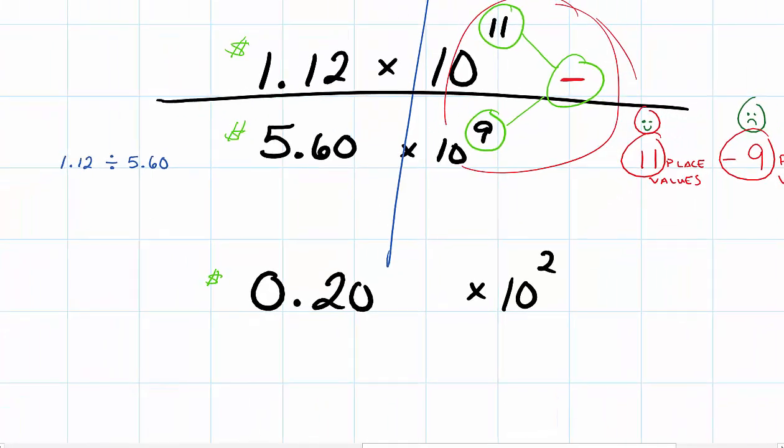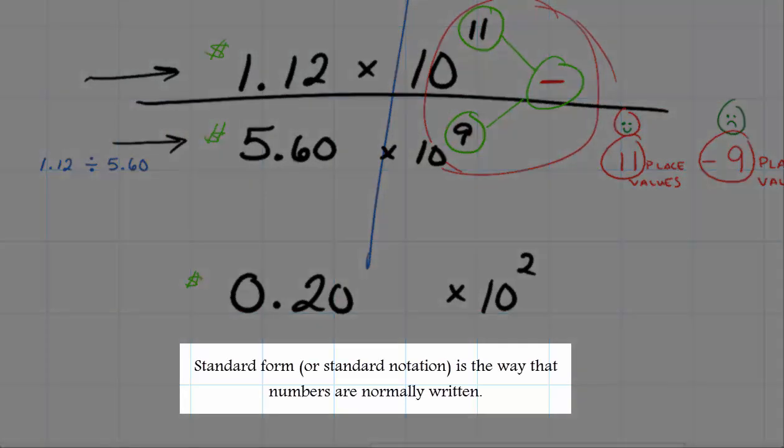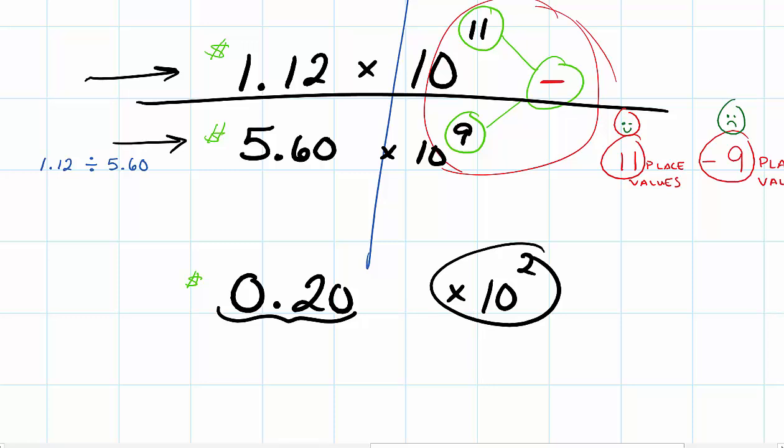So we're almost home free. We want to know how many times bigger is this first number than the second number. Well, all we've got to do is convert this back to standard form. This looks like 20 cents here, but this is telling us to give it two more place values. So that means I'm going to move my decimal point two place values to make the number bigger. And this went from 20 cents and now looks like $20.